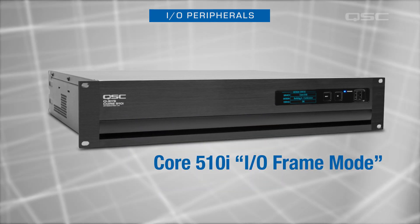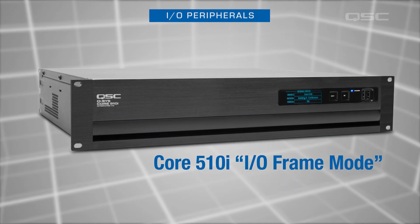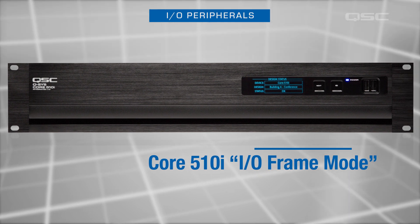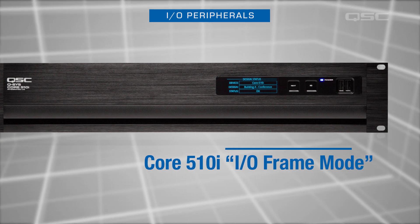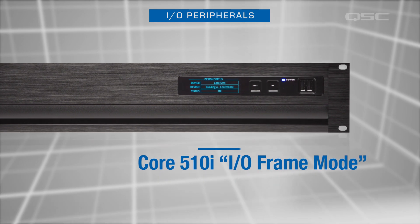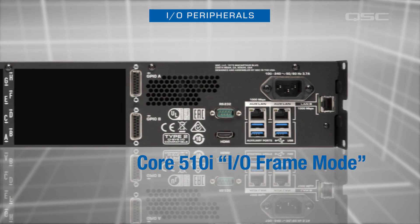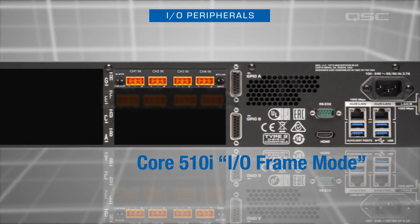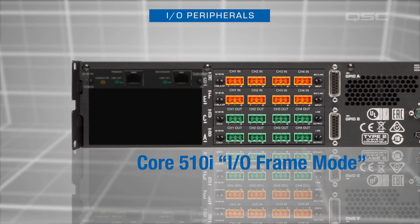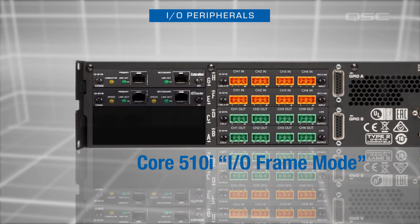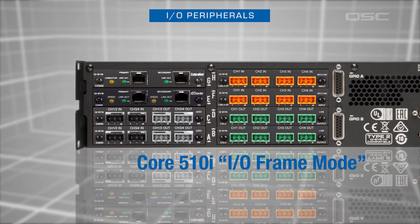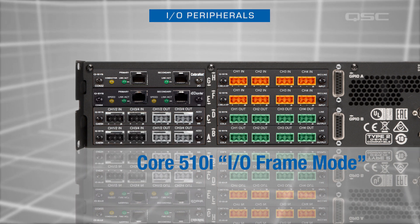If you need even higher channel count density in your installation, or you have highly specialized I.O. requirements, certain cores, like the Core 510 for example, can be operated in I.O. Frame mode. This mode offers the ability to integrate up to 128 by 128 audio channels via its eight I.O. card slots. Keep in mind that you'll need another Q-SYS core on the network to do the processing.